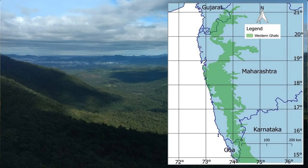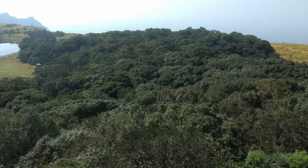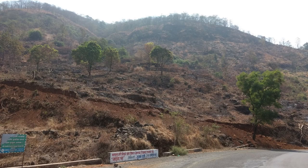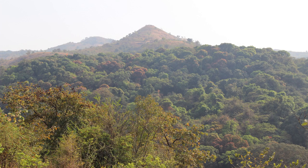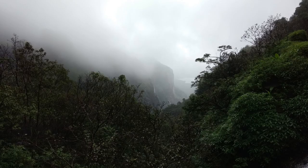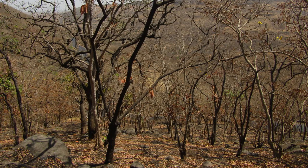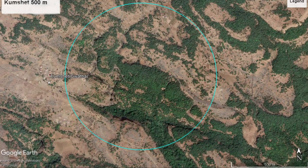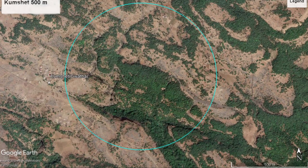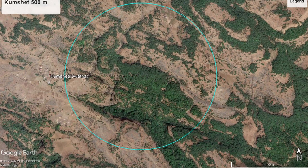Northern Western Ghats extends through states such as Gujarat, Maharashtra, Goa, and Karnataka. Forests of this region are highly fragmented due to various anthropogenic activities. Moreover, they are confined to a few protected areas, valleys, private lands, and traditionally protected sacred groves. But despite their fragmented distribution, these forests act as repositories for medicinal plants, endemic species, and wild relatives of crop lines.